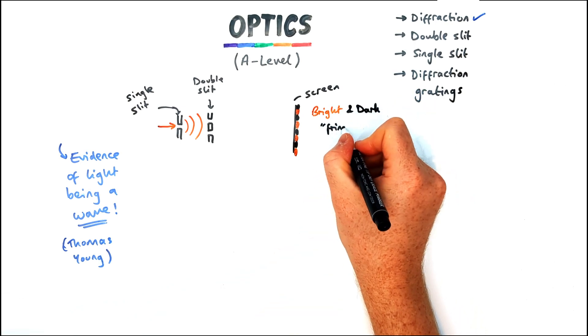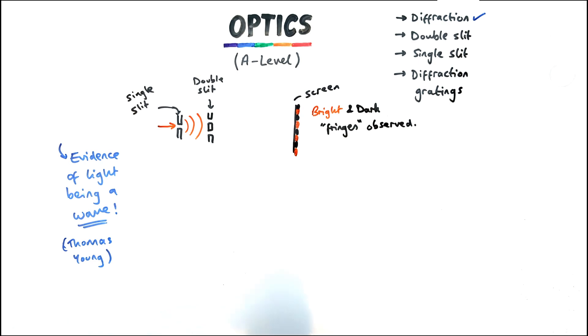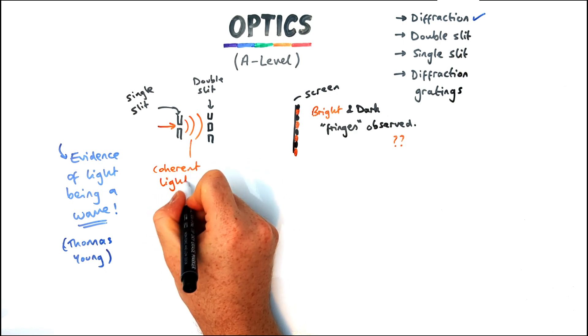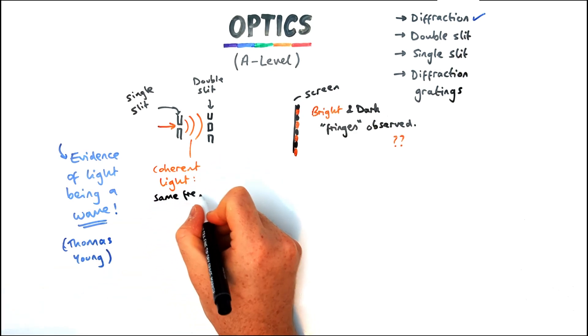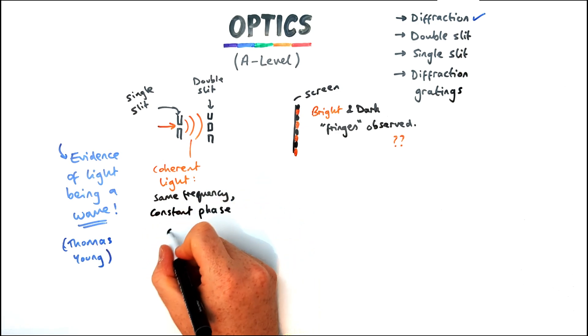So let's have a look at the bright and dark fringes first of all that are observed. Now first thing to note in this setup is the light coming through the single slit. The reason there's a single slit there first is so that light is coherent and that means all the light traveling through the single slit has exactly the same frequency and has a constant phase difference.